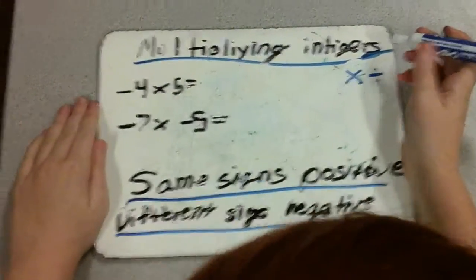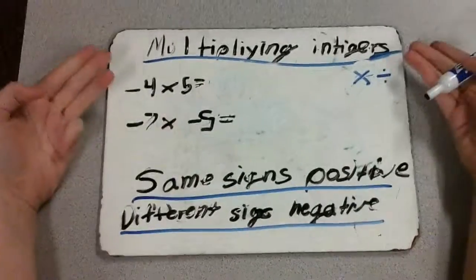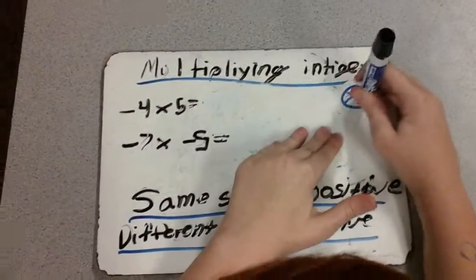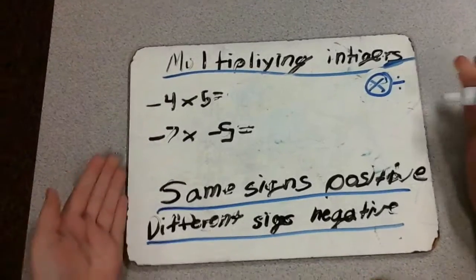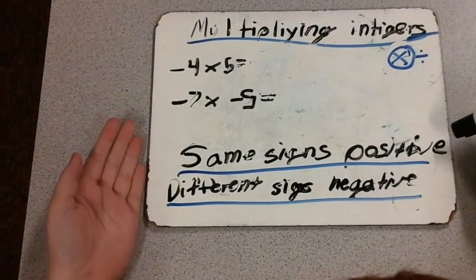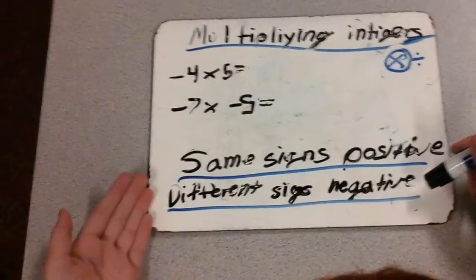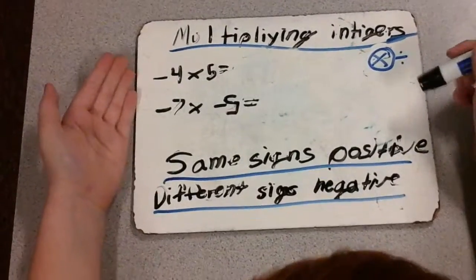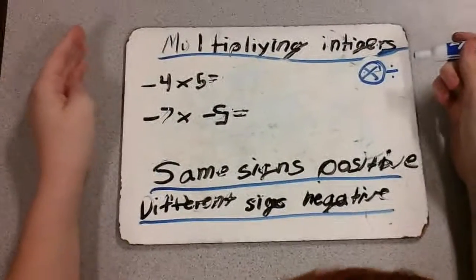Welcome back. I'm still just as awkward, and today, we're multiplying integers. This one's pretty weird. If it's the same sign, it's a positive answer. If it's a different sign, it's a negative answer. Other than that, you just do it normally.